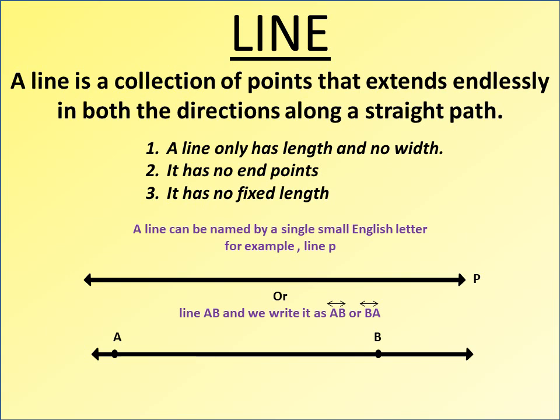It has no end points. It has no fixed length. A line can be named by a single small English letter, for example, line p, or line AB and we write it as line AB or line BA.